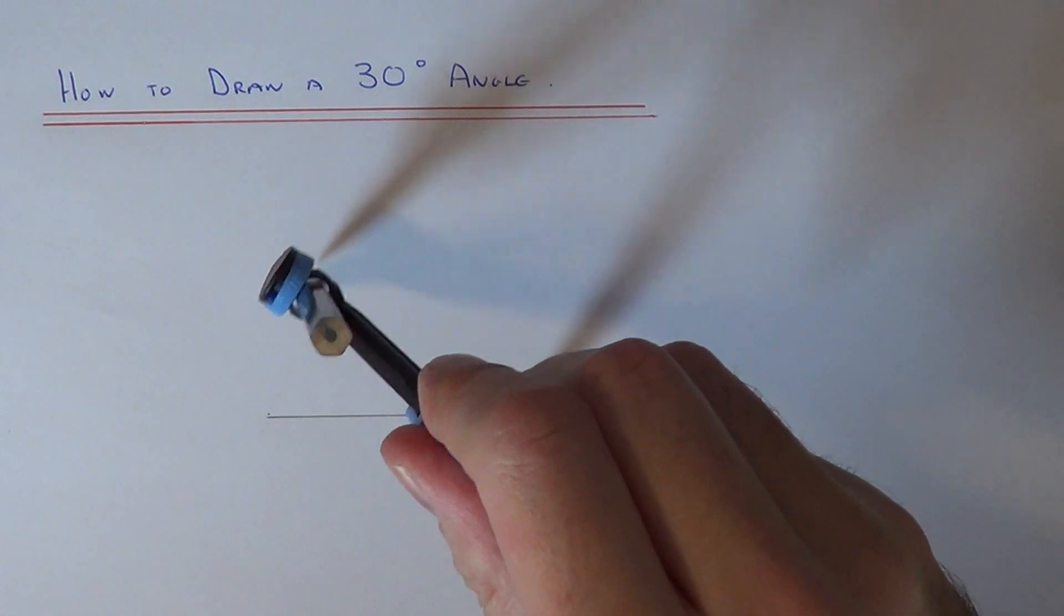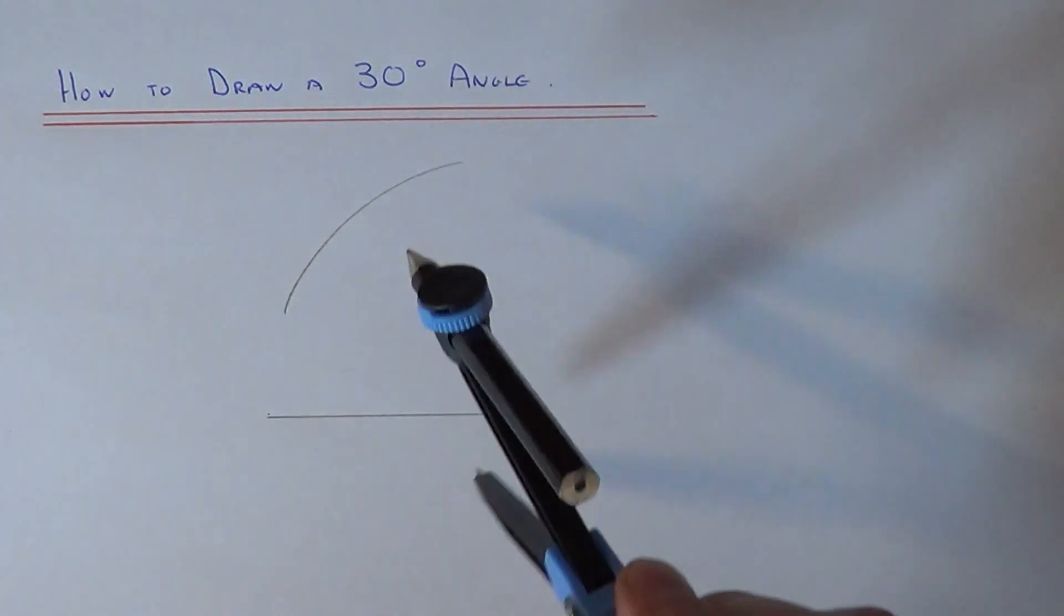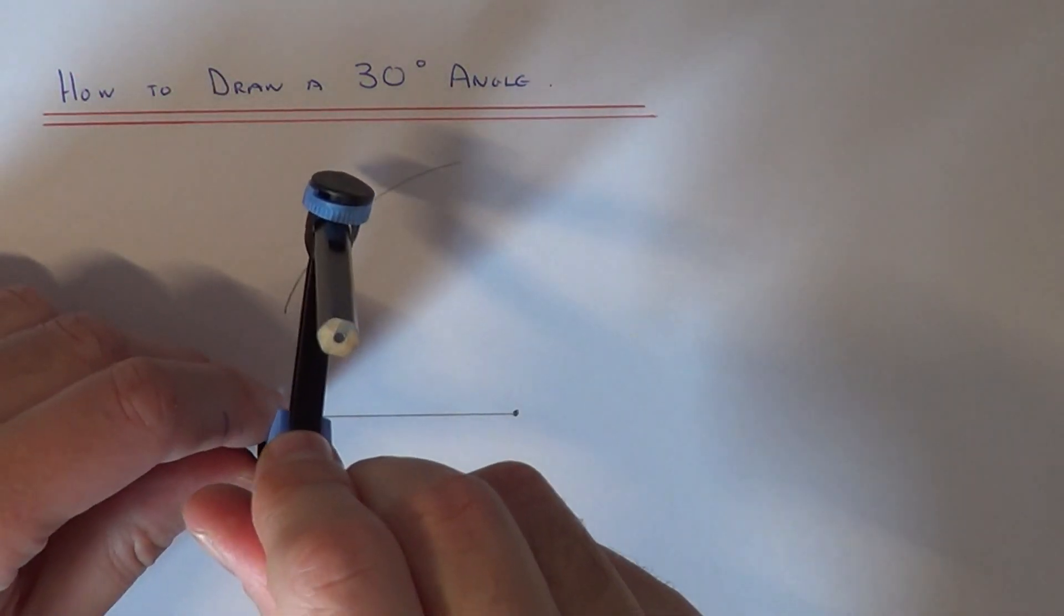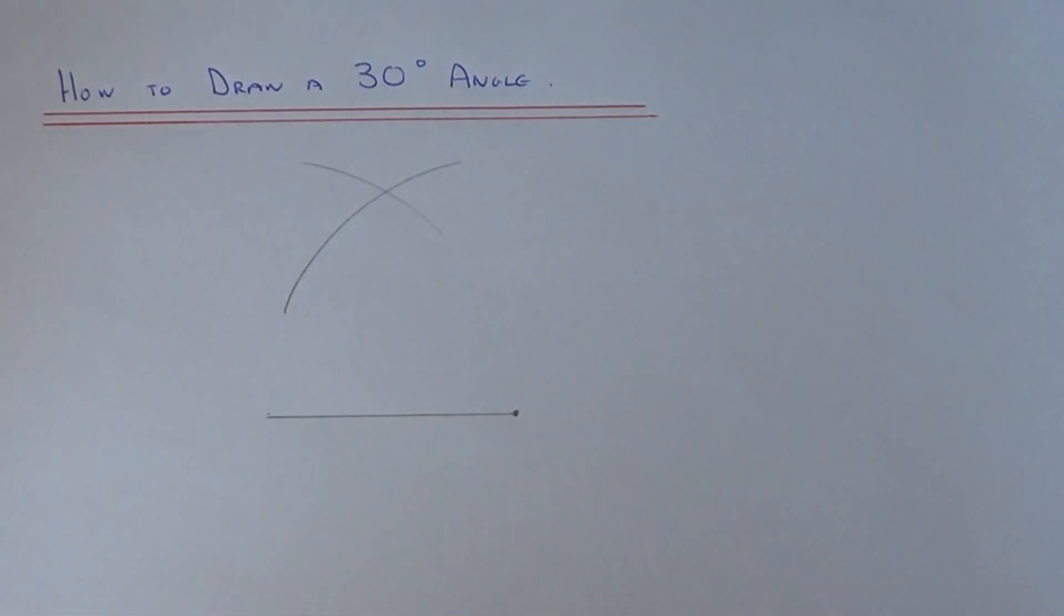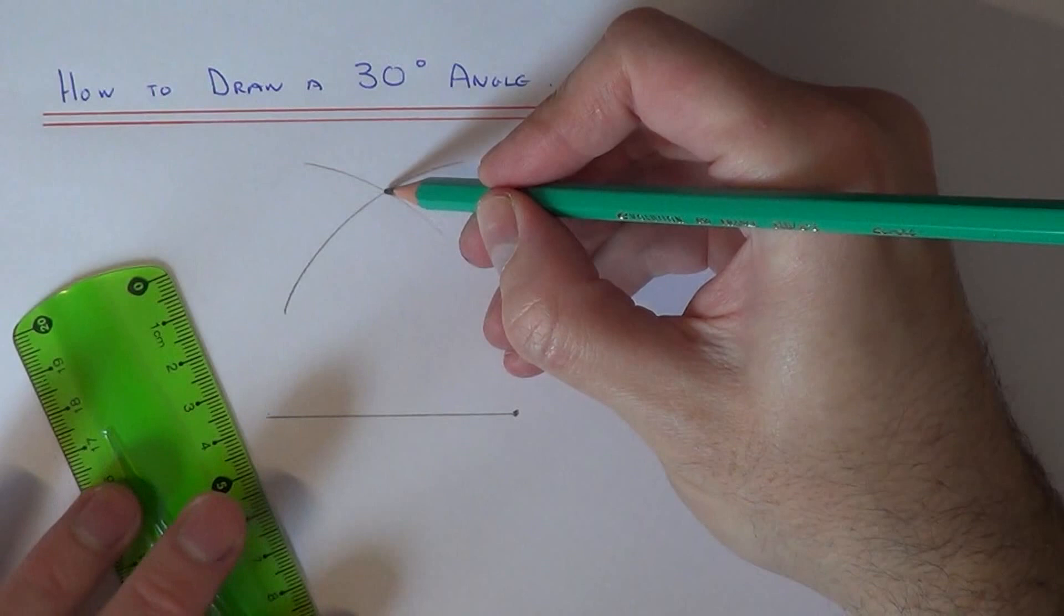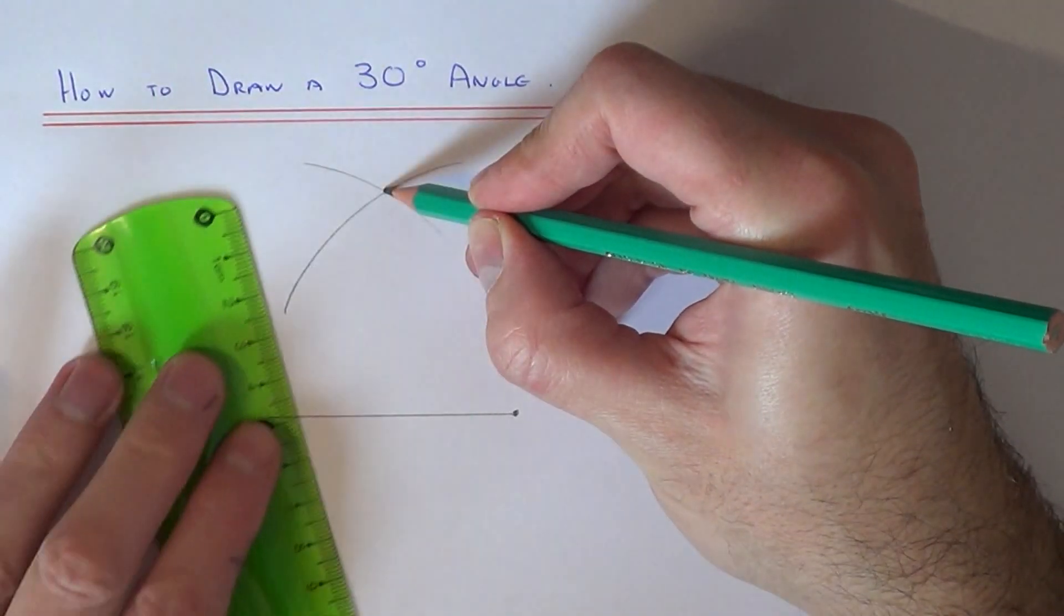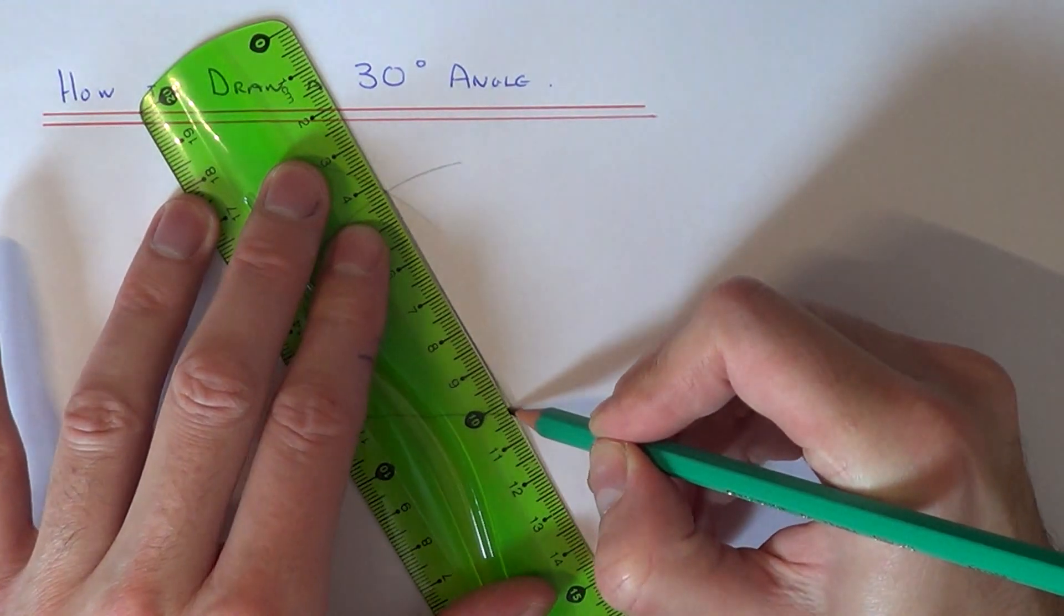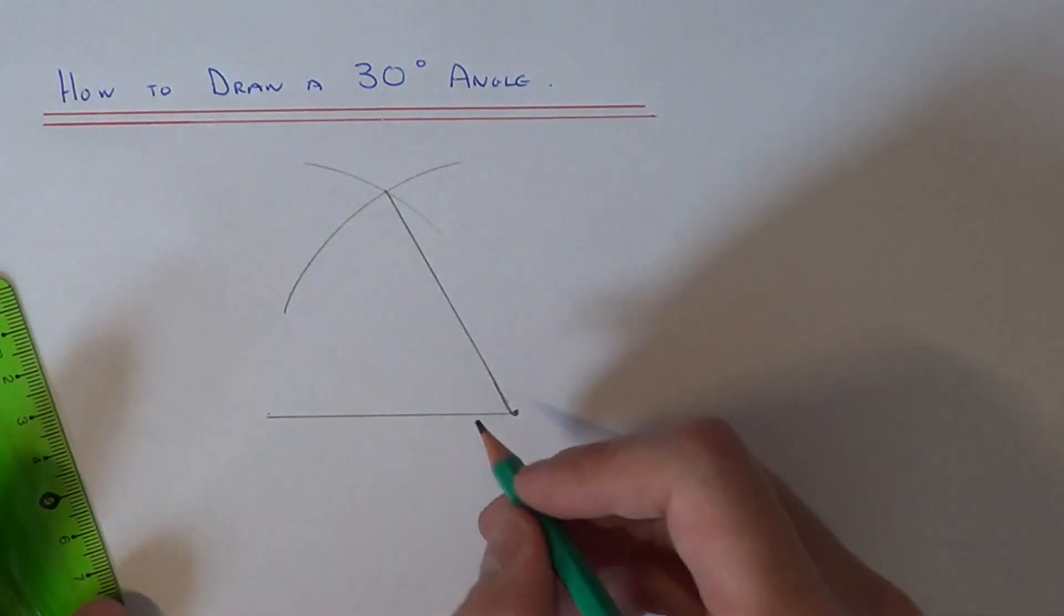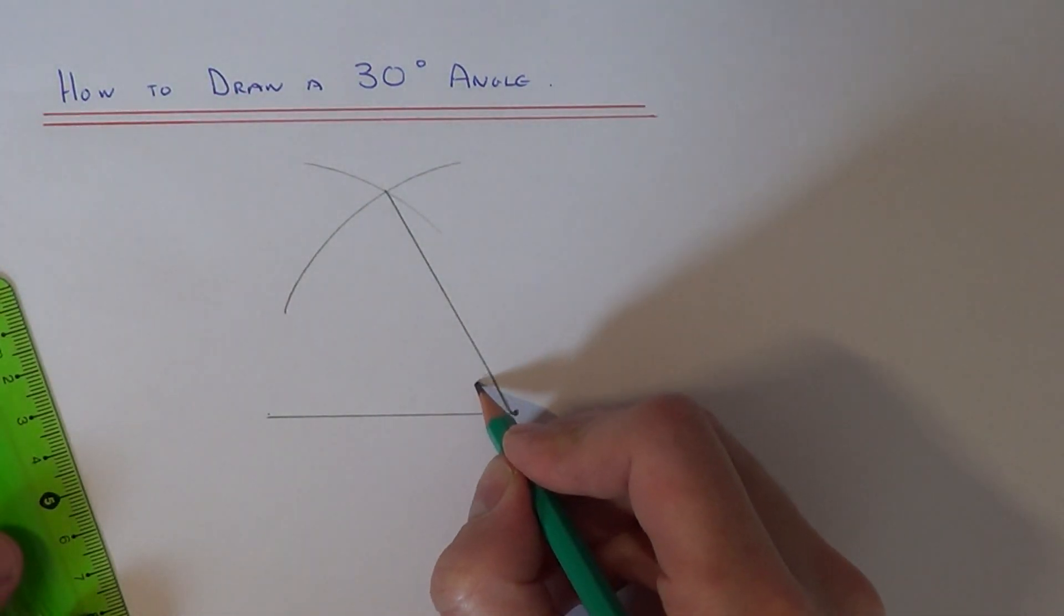If we do an arc from this side of the line and we do another arc from the other side of the line, and if we join this intersection point at the top here back to the right hand side, this angle here will now be 60 degrees.